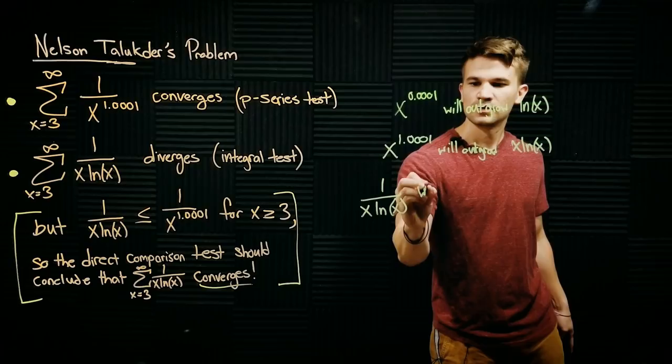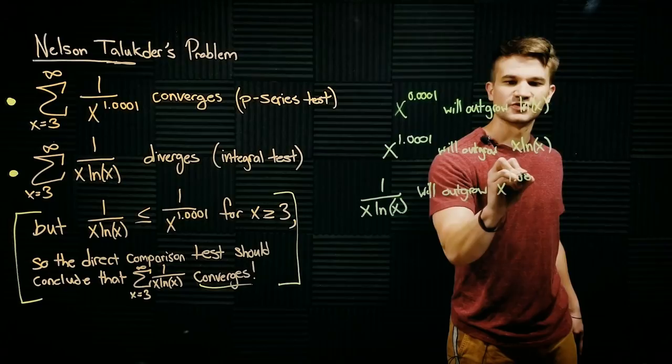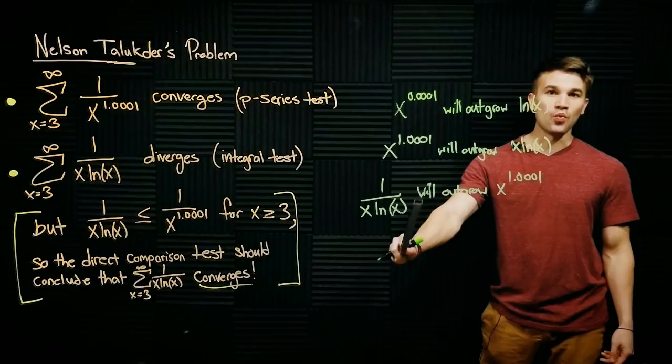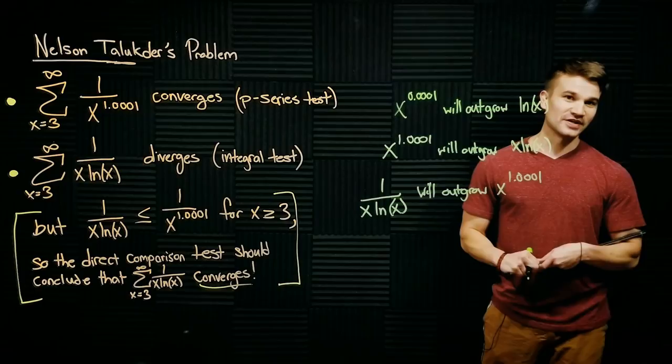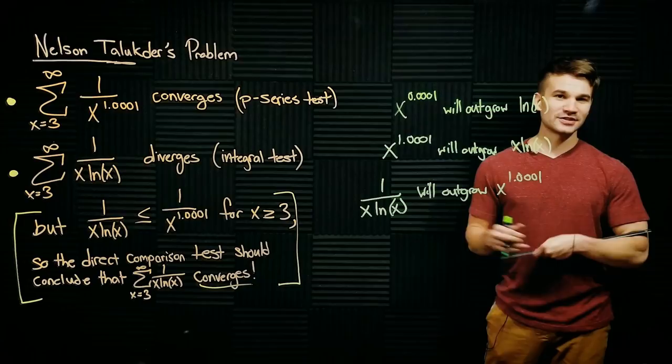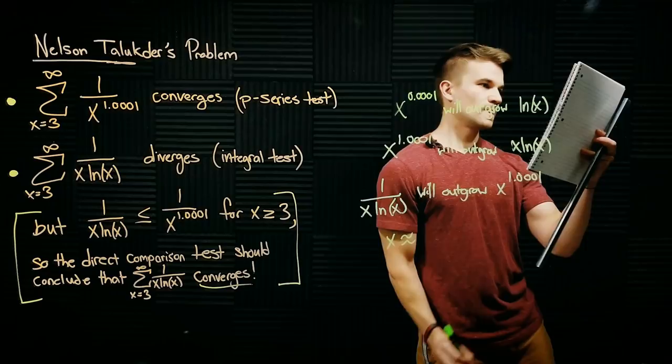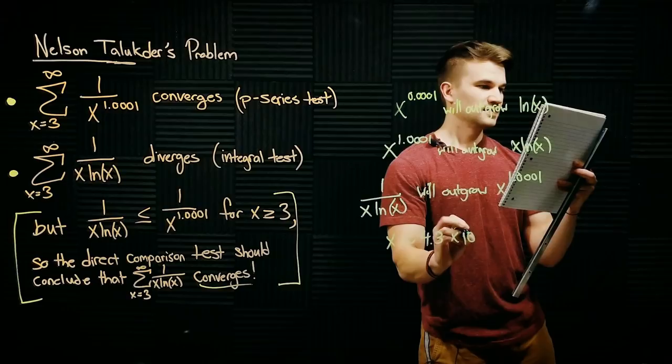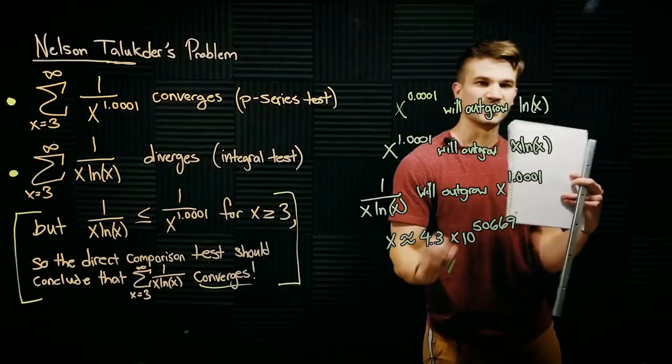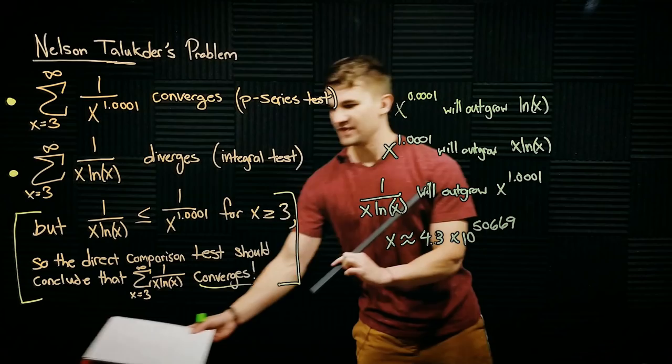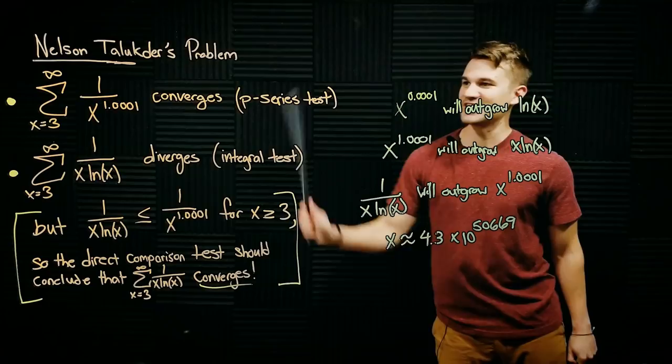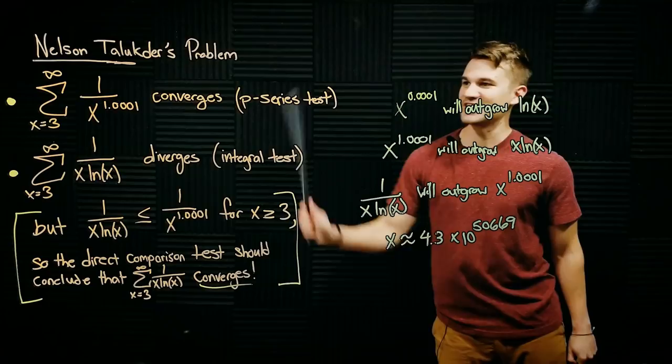So we can conclude that when we take these reciprocals, 1 over x to the natural log of x to the 1.0001. So eventually, these terms will be larger. It just so happens that it happens at a very, very, very large value of x. This value of x is so large that Wolfram couldn't really compute it or tell me about it. It will outgrow at around 4.3 x 10 to the 50669. So a very large 50,000 digit number is where eventually the terms of this series are larger than the terms of that series. And that is why this series diverges and the limit comparison or the direct comparison test does not apply.